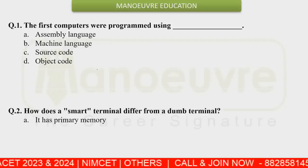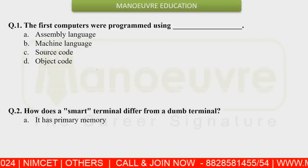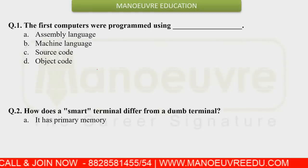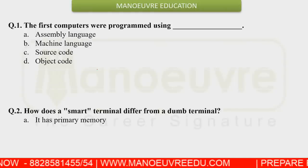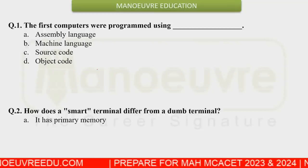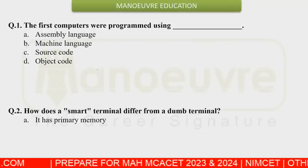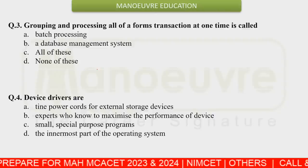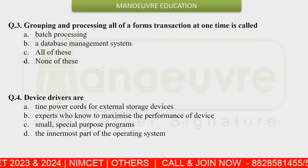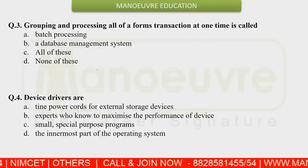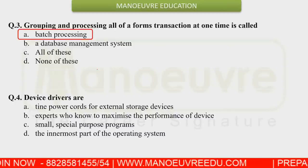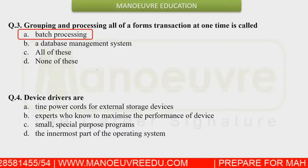There were questions about how a smart terminal differs from a dumb terminal. Also, grouping and processing of all forms of a transaction at one time is called batch processing — again a question from operating systems.